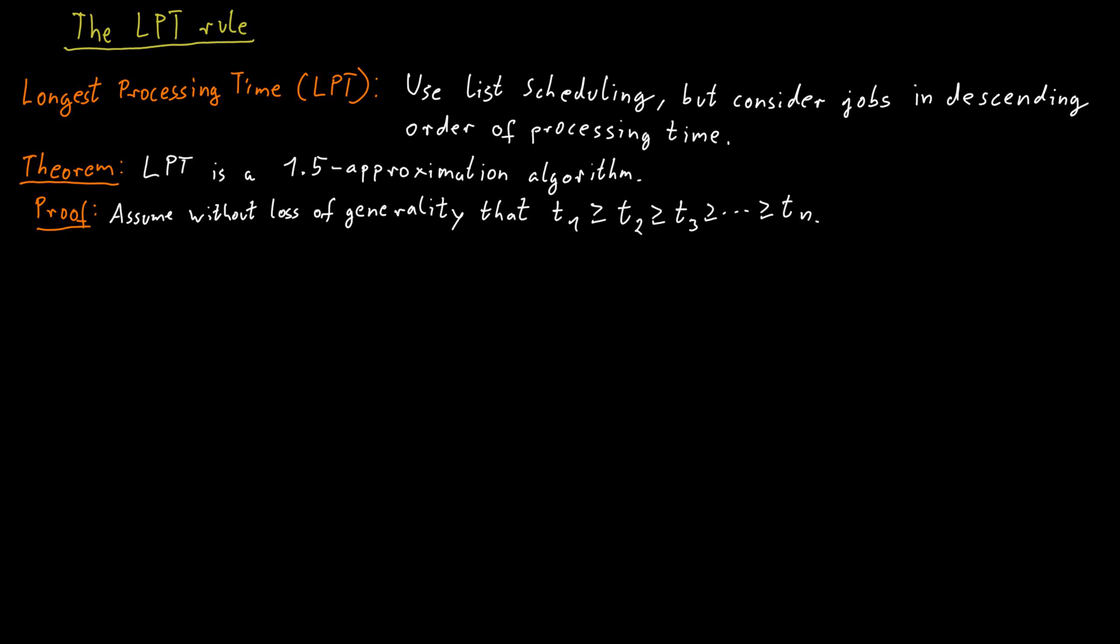Now, consider the m plus 1 largest job, assuming such a job exists. So, if we have more than m jobs, then the optimal makespan has to be at least as large as two times the size of the m plus 1 largest job. And the reason for this is the following.